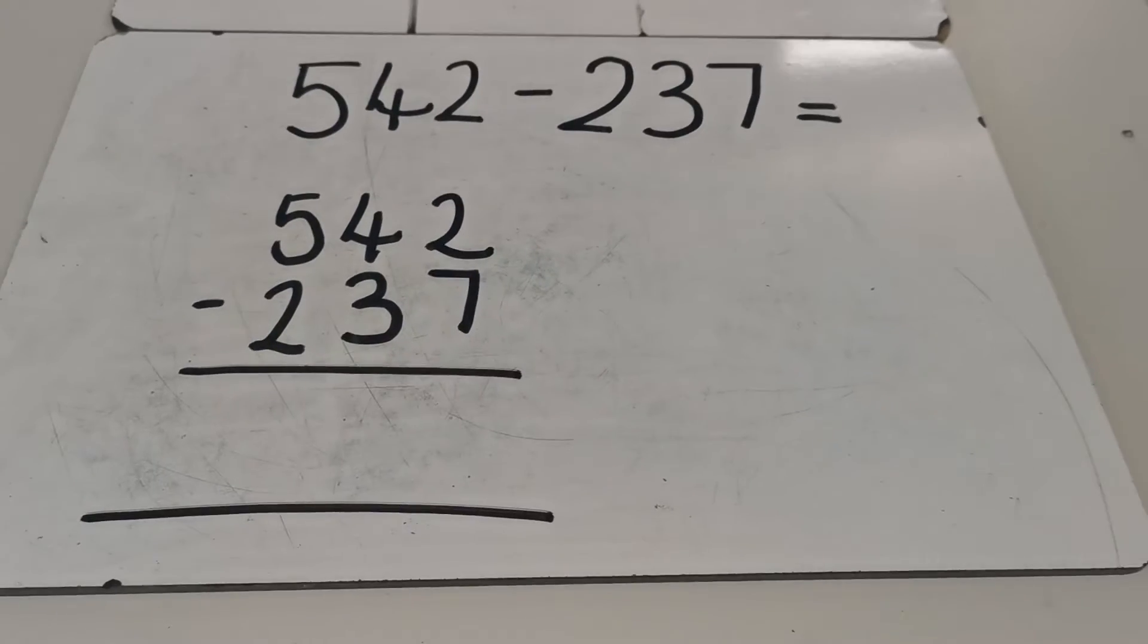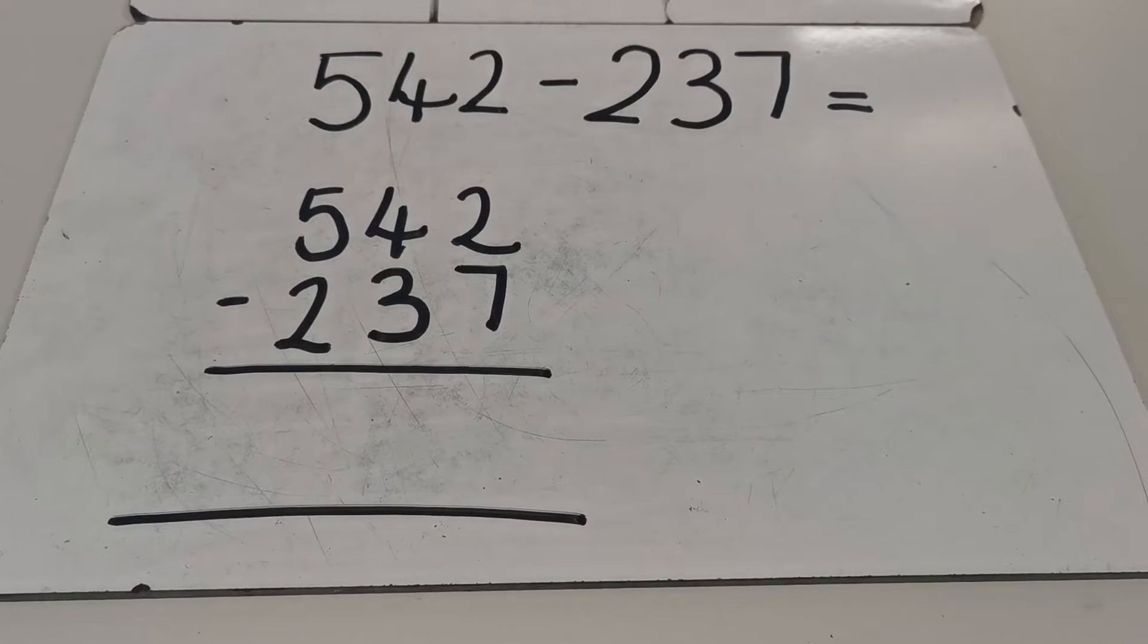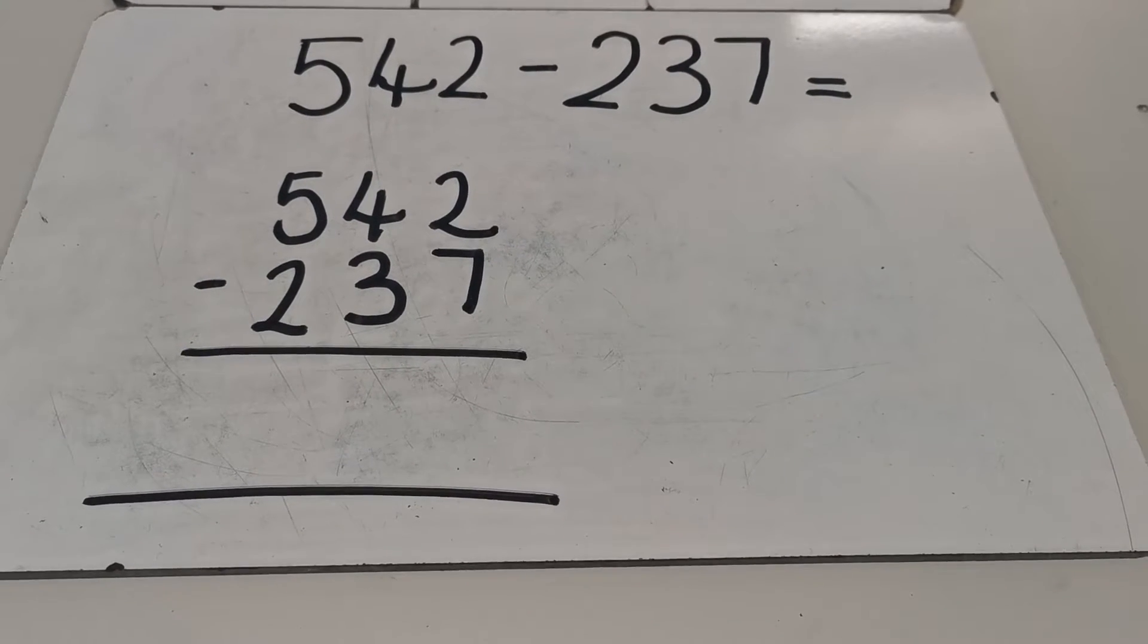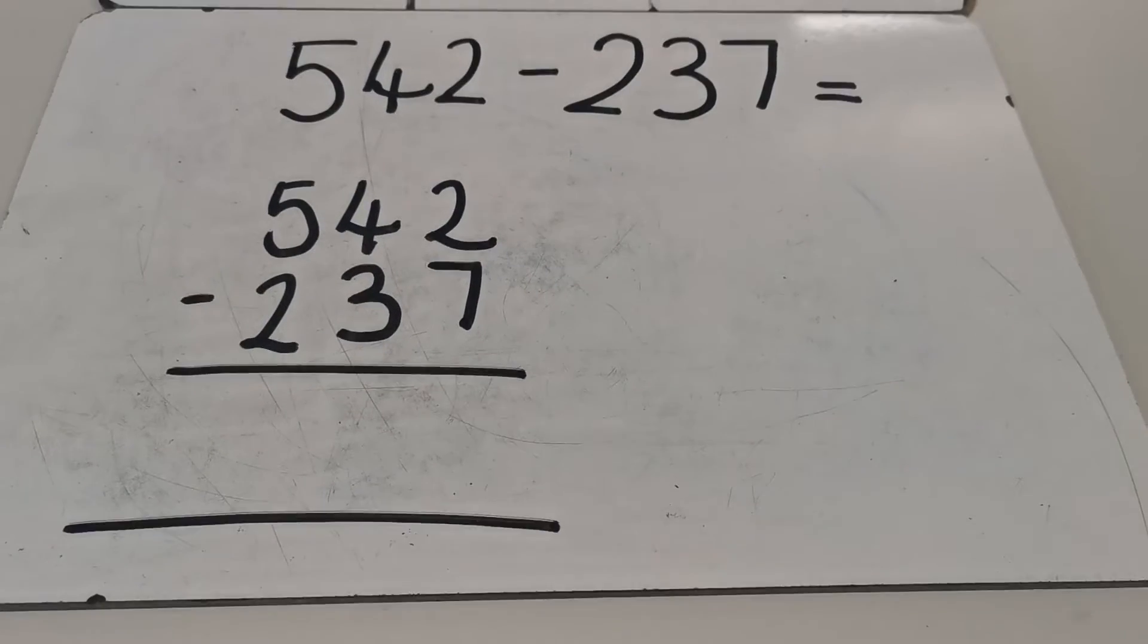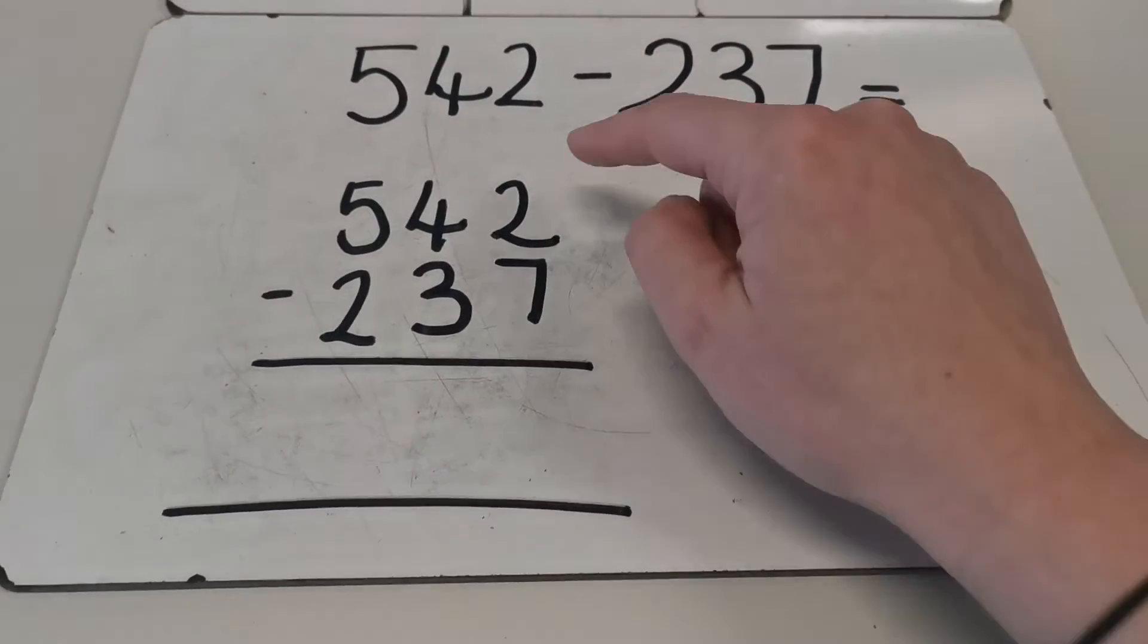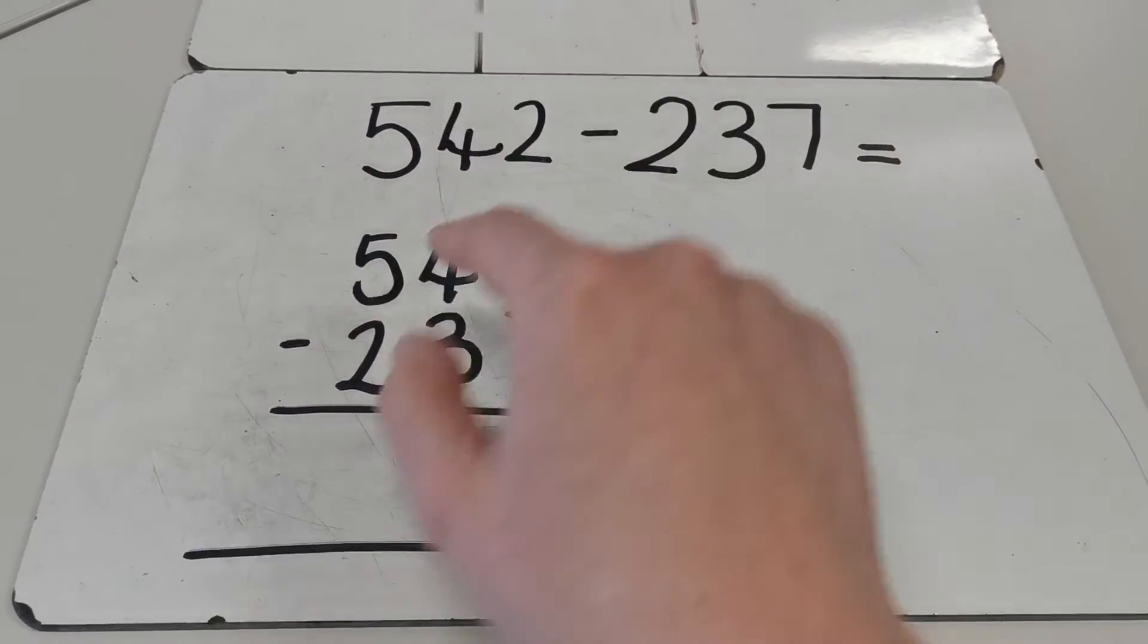Hi Year 3, it's Miss Hill again, so we're going to look at a second example. Just like I said in the last video, you need to make sure when you're subtracting, the biggest number goes first. When you're placing your calculation into a written method, you need to place it into columns so you've got all your ones together, your tens together, and all your hundreds together.